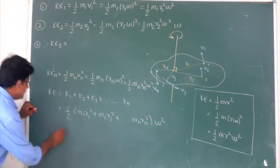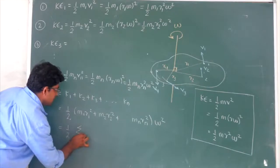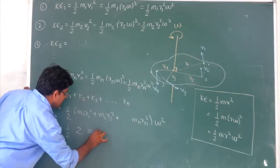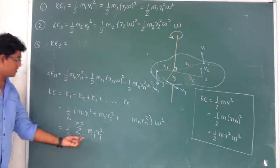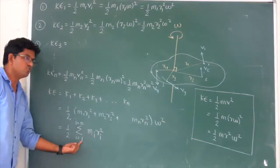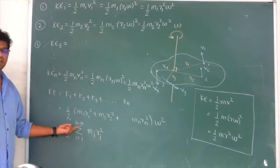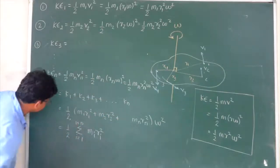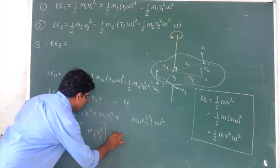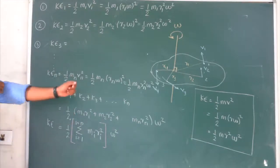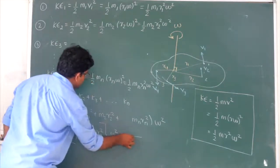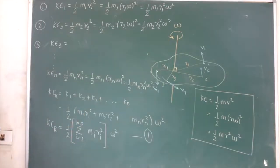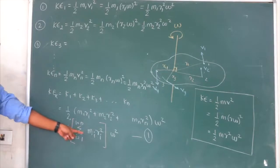So the total kinetic energy in rotational motion equals half times summation of MiRi squared times omega squared. This is the equation for kinetic energy in rotation.